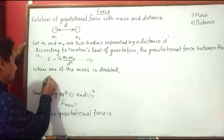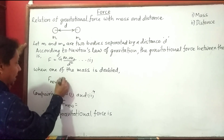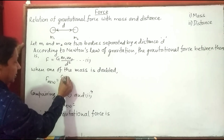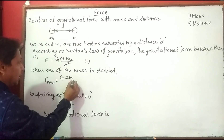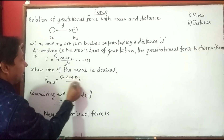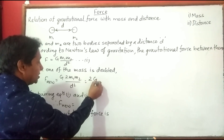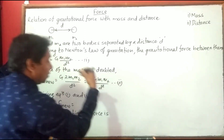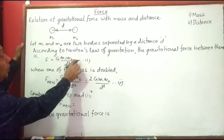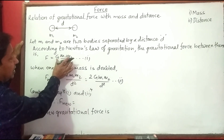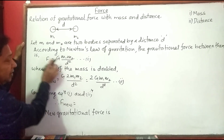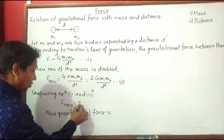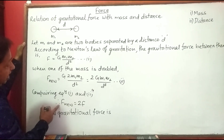When one of the masses is doubled, the equation becomes different. New gravitational force F_new will be: if m1 is doubled, instead of writing m1 I am writing 2·m1. So F_new = G·(2·m1)·m2 / d². This is equal to 2·G·m1·m2 / d². This is equation number two. Now comparing equation one and equation two: G·m1·m2 / d² is equal to F, so this becomes 2F. Therefore F_new = 2F.